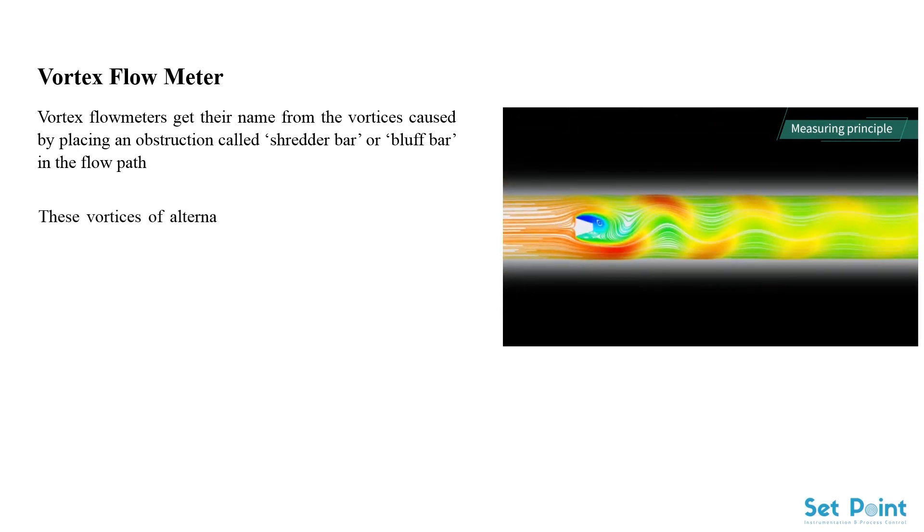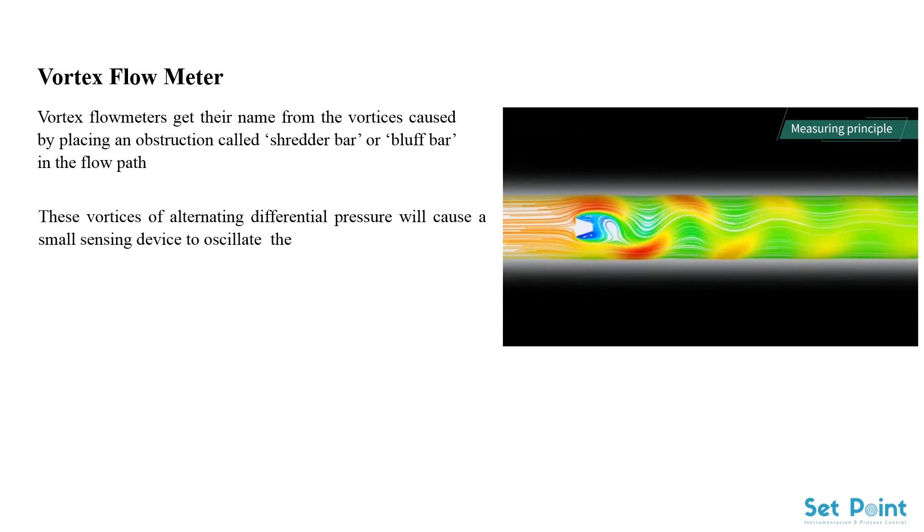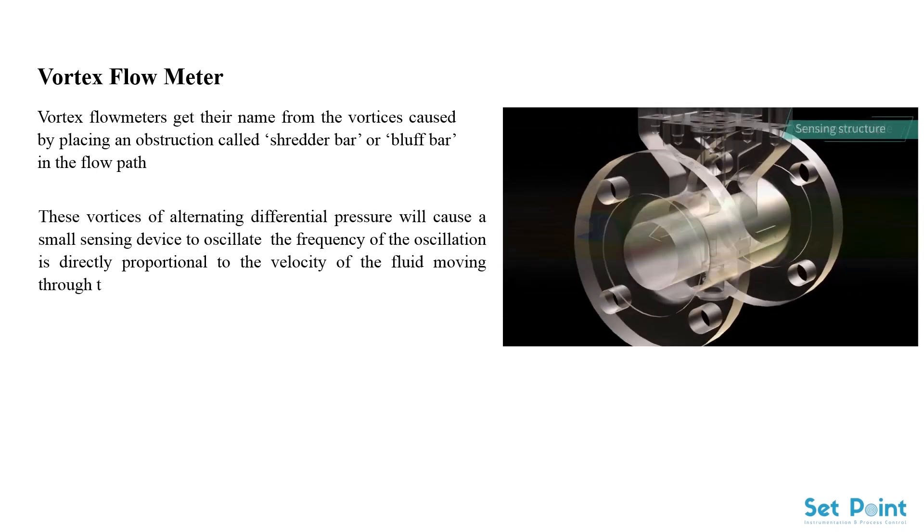These vortices of alternating differential pressure will cause a small sensing device to oscillate. The frequency of the oscillation is directly proportional to the velocity of the fluid moving through the pipe.